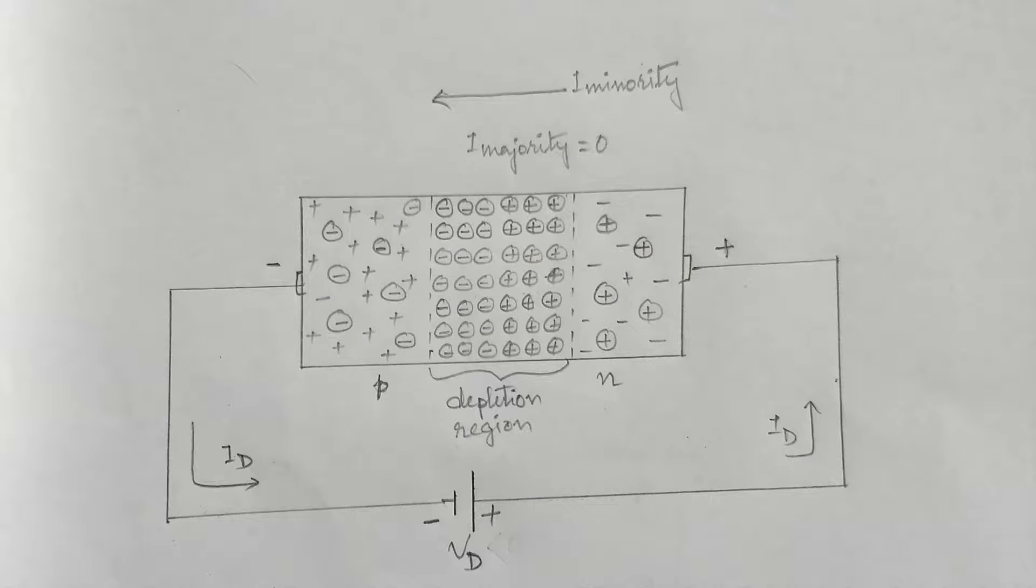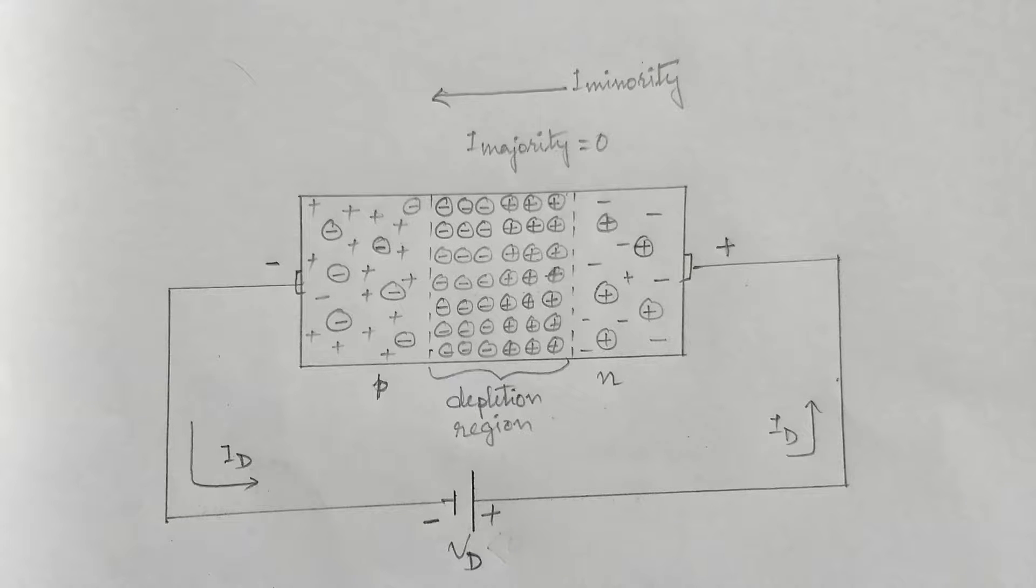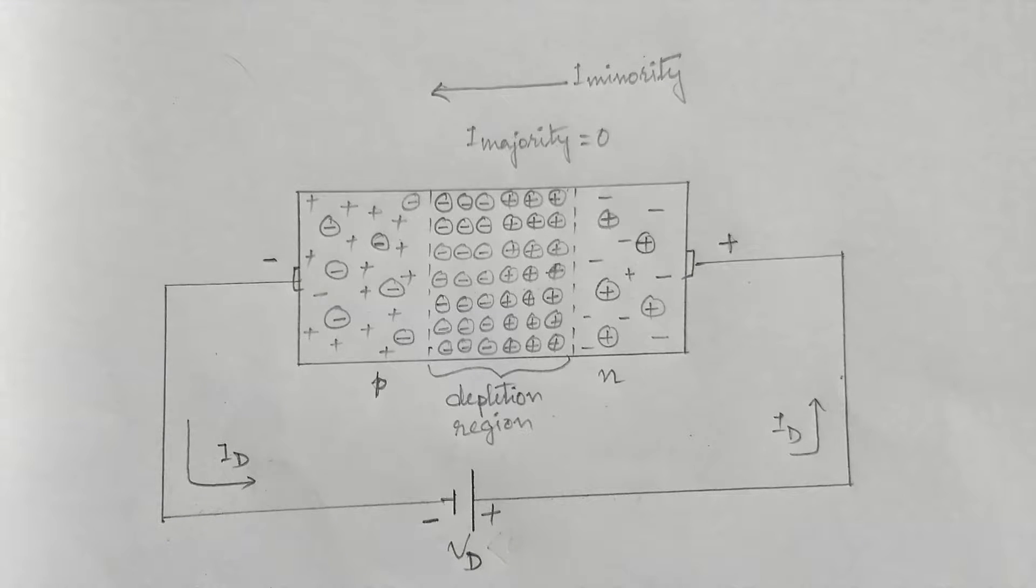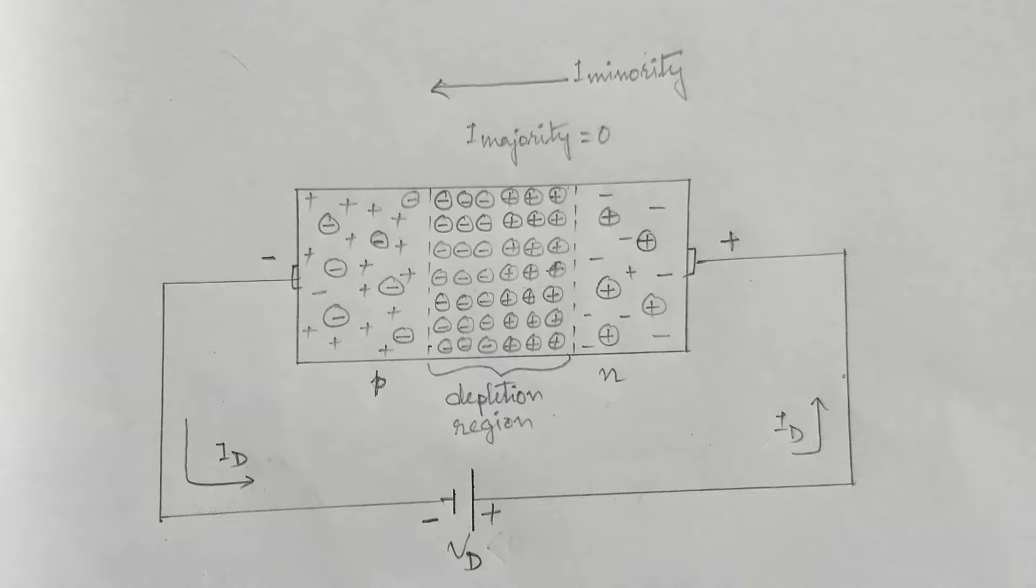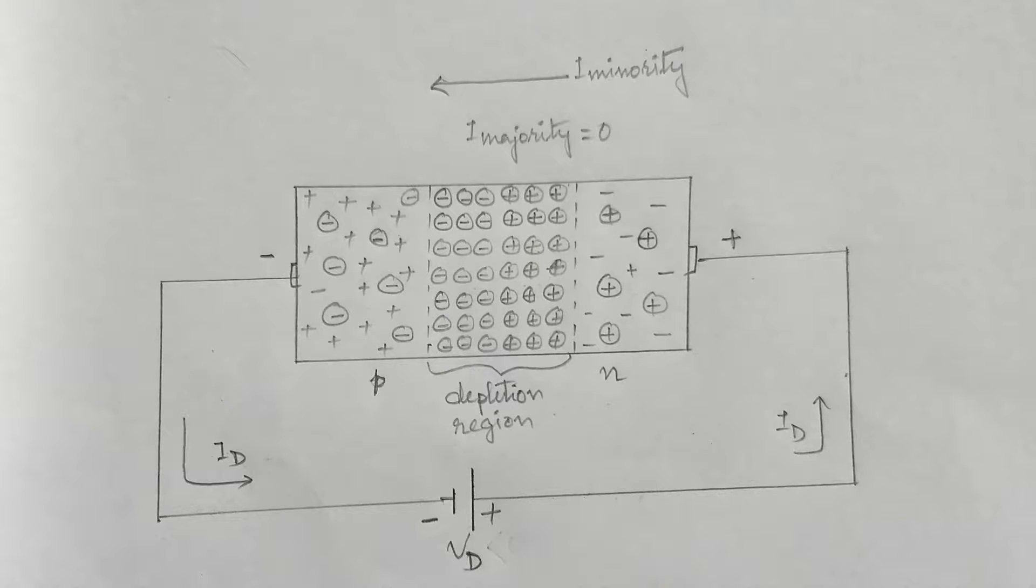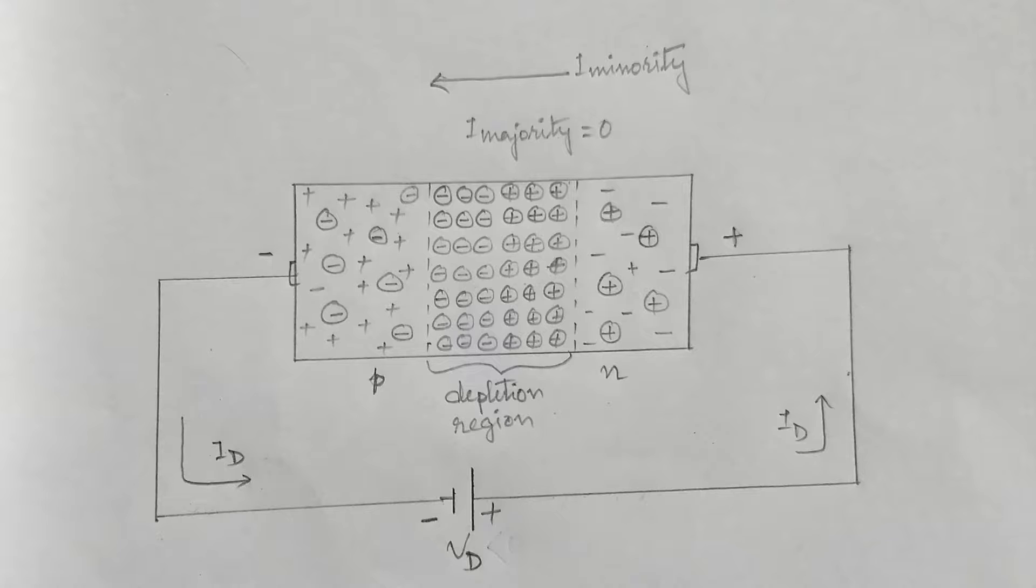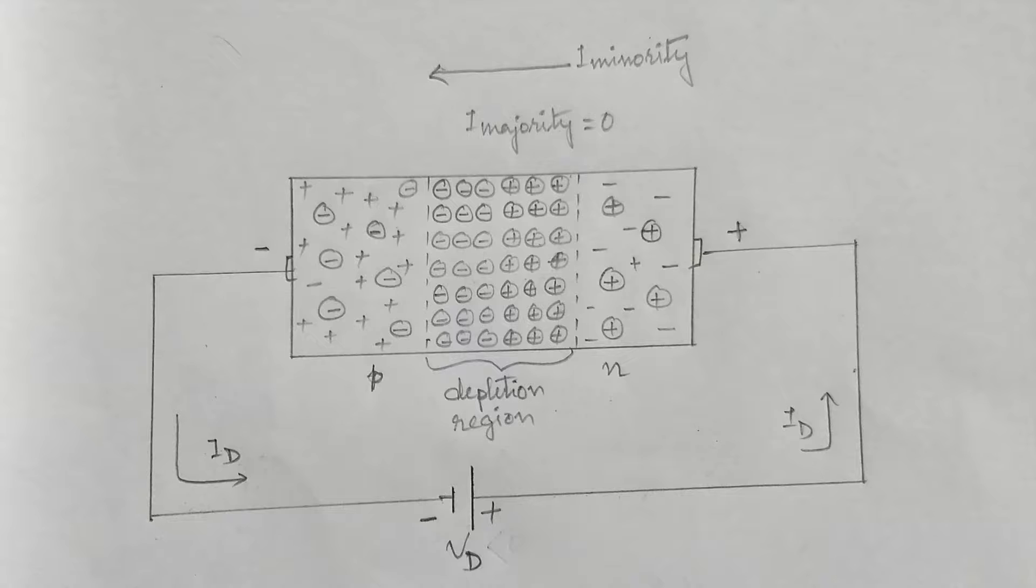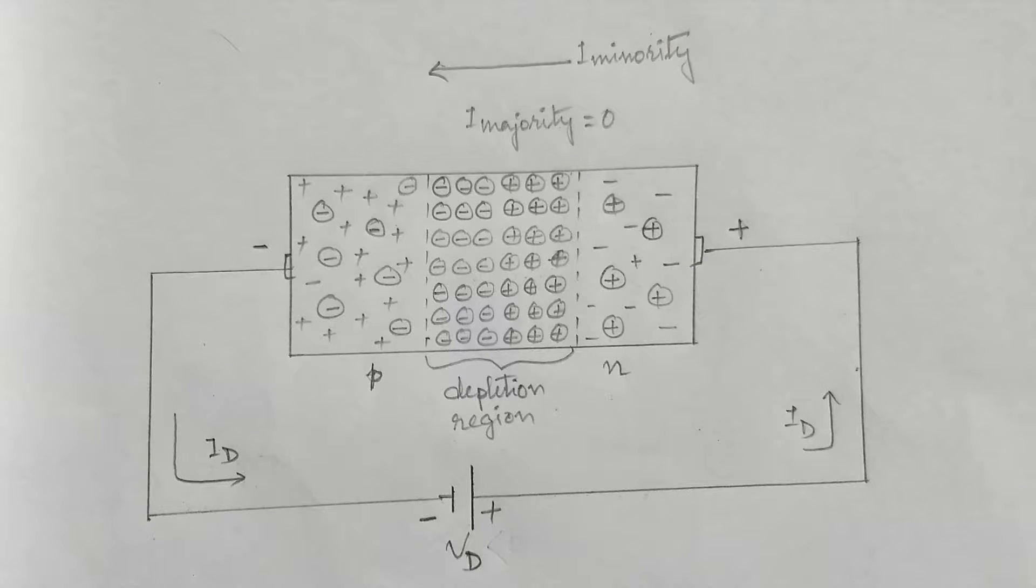When the negative voltage or reverse bias potential is increased further, the velocity of the minority carriers will also increase, which in turn increases the reverse saturation current. These high velocity minority carriers will collide with the stable atomic structure and release additional electrons to become free.